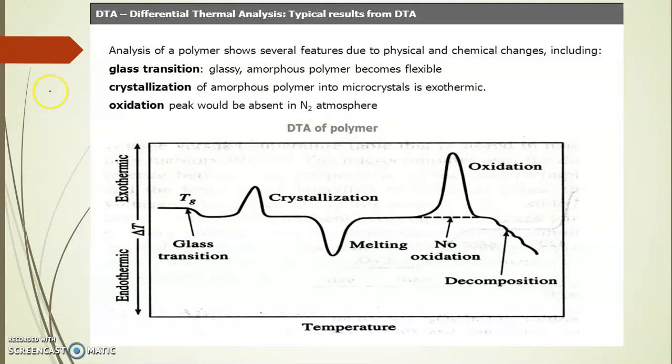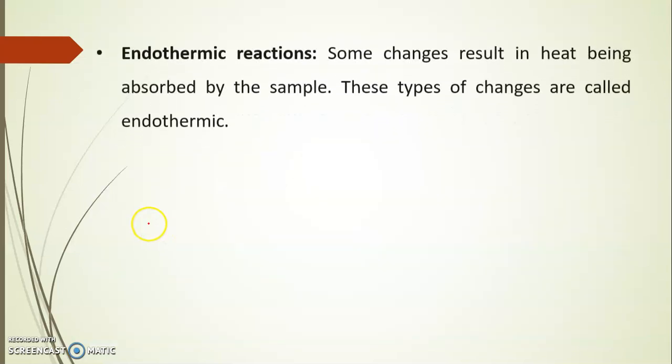Now, when we apply the temperature or when we apply the heat, there are some physical and chemical changes that take place in the sample. These changes are known as exothermic reaction or endothermic reaction. These are the examples of some endothermic and exothermic reactions. Now, let us see what is meant by exothermic and what is meant by endothermic.